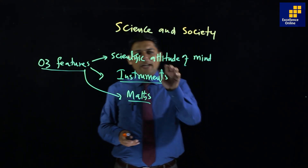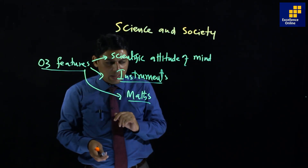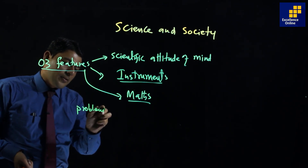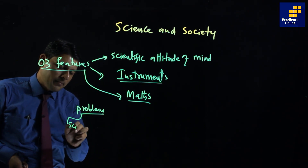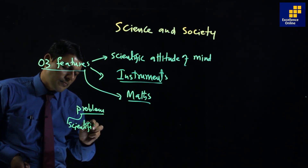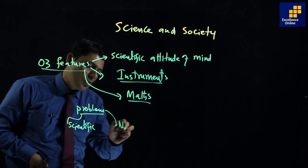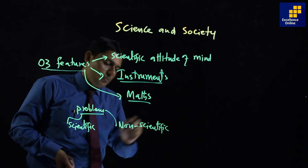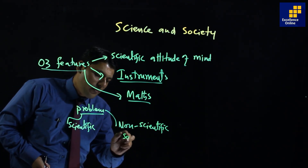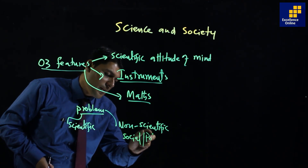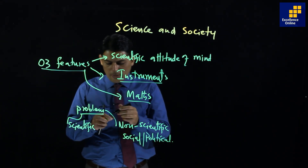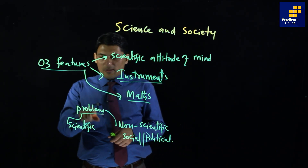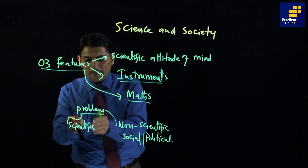So we have these three features of science since the 17th century which led to quick development. Now for question one in the paper, we have two kinds of problems. One is scientific problems. The second is social problems — economic or other non-scientific problems, including social and political problems.